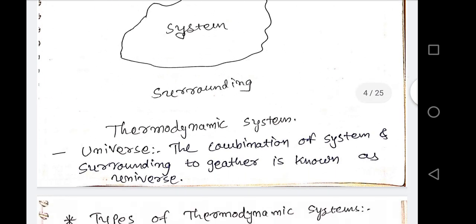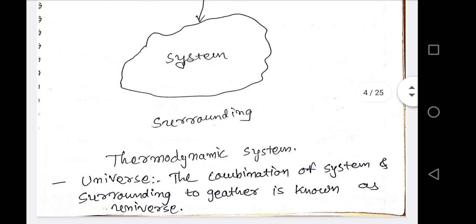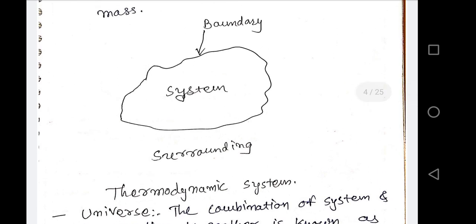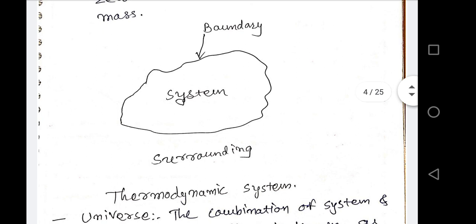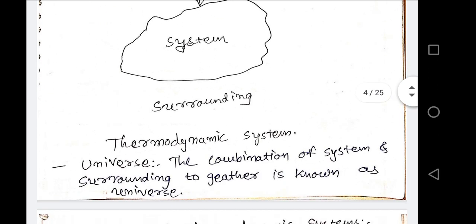The universe means the combination of the system, surrounding, and boundary together — it is known as the universe. Our atmosphere can be considered as a universe because in it, the substance is available, the surrounding is available, and the boundary is also available. So the universe is the combination of system, surrounding, and boundary.